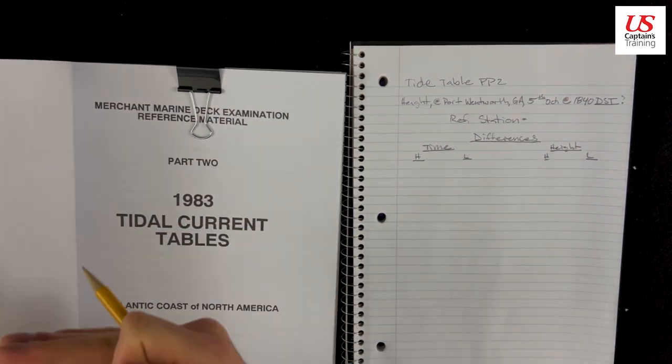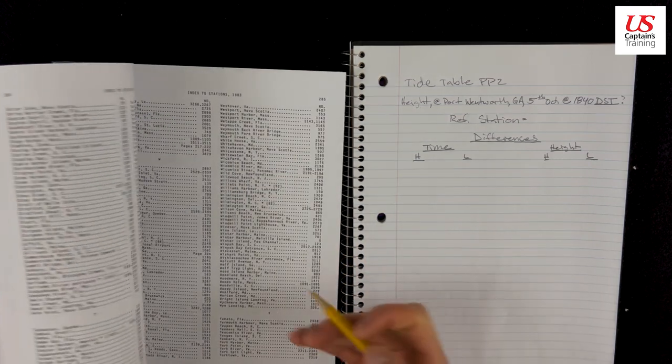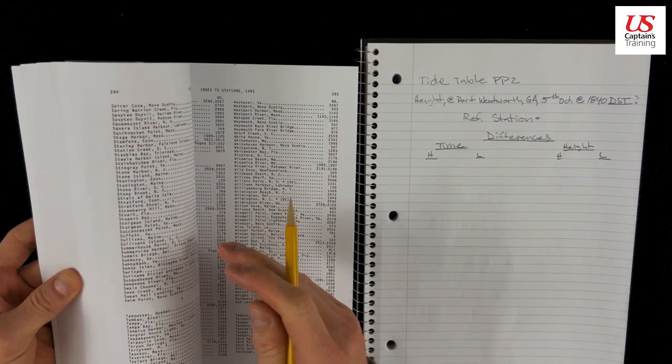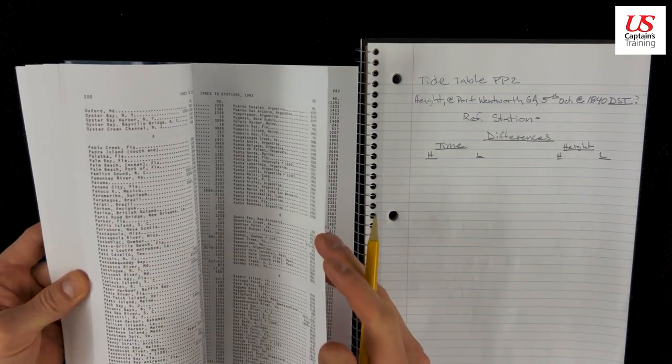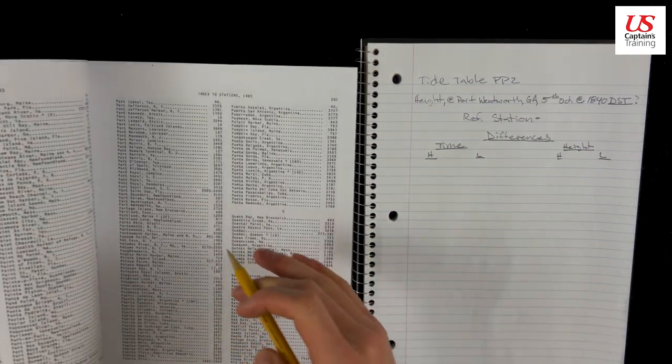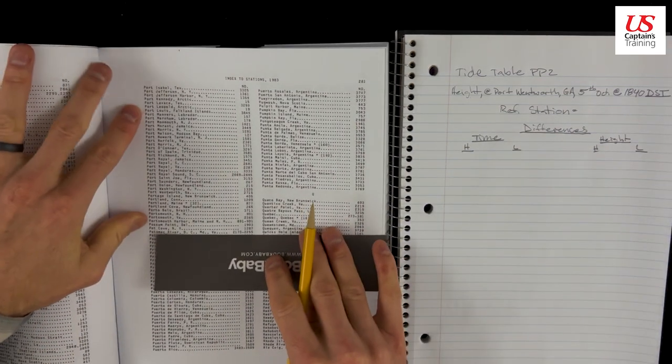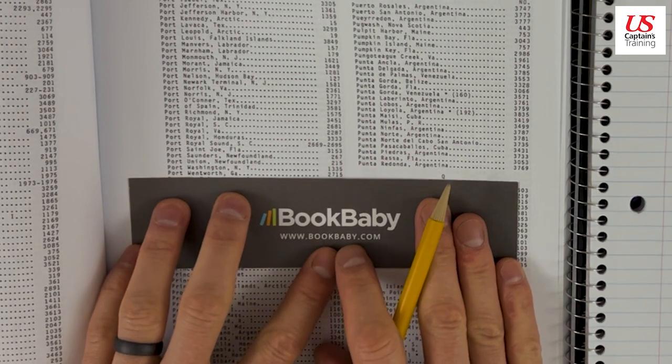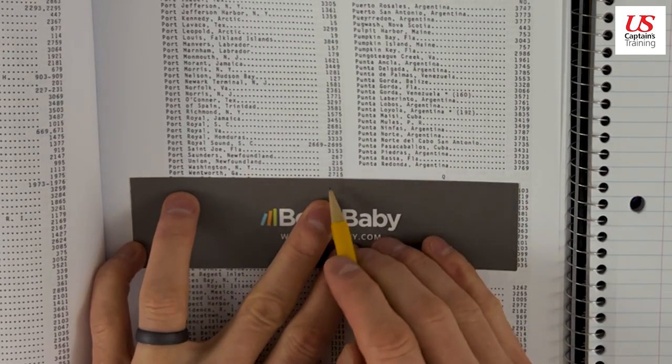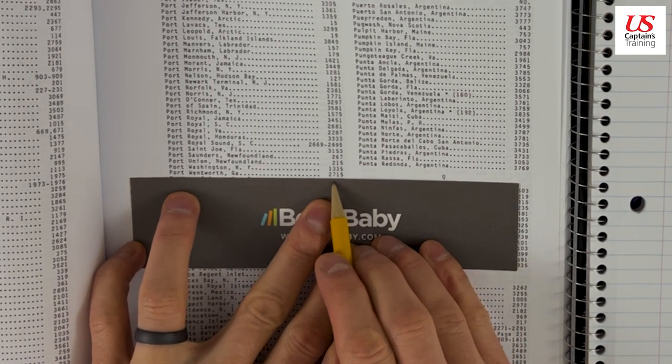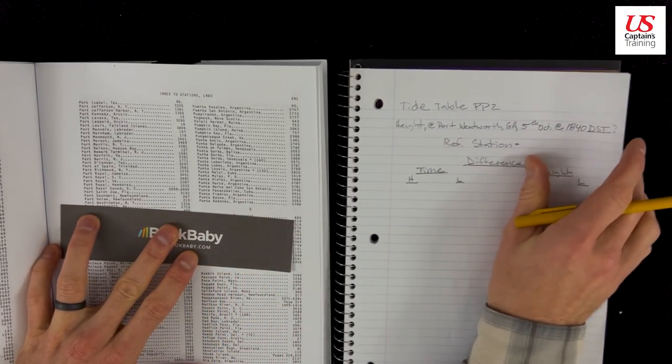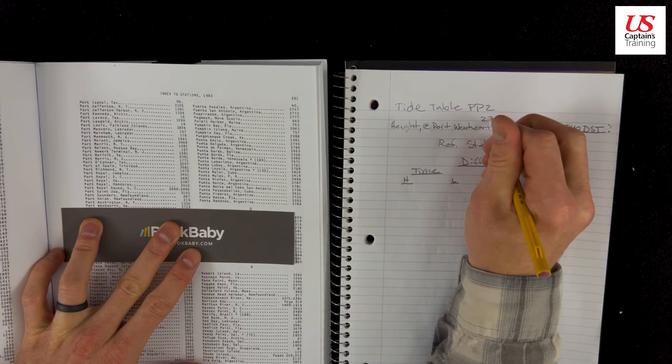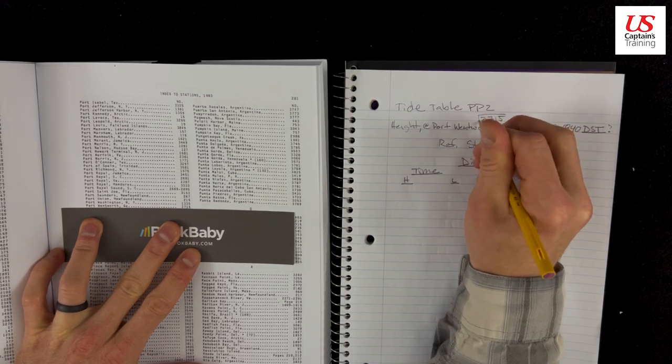This is the current tables. We're forward in the book. And here we are in the index to the tide tables. We're looking for Port Wentworth. At the bottom, Port Wentworth, GA, 2715. I'm going to record that. Port Wentworth, 2715.